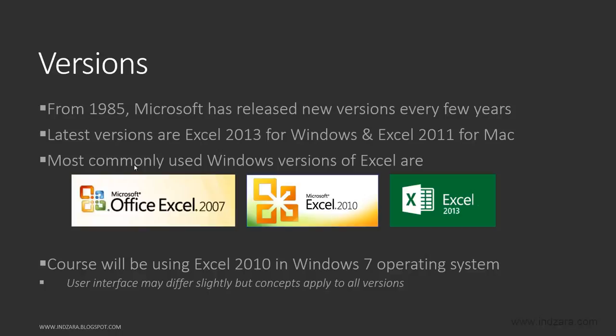The latest versions available are Excel 2013 for Windows and Excel 2011 for Mac. The most commonly used versions as of now are Excel 2007, Excel 2010, and Excel 2013. There are still people who use Excel 2003, but over time everybody is migrating to the newer versions. In this course, I will be using Excel 2010 and I have a Windows 7 operating system on my computer. The Excel user interface may differ slightly between different versions, but the general concepts apply to all versions.